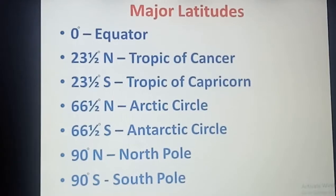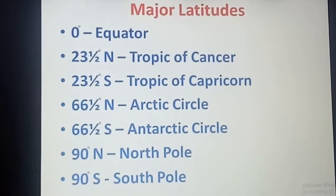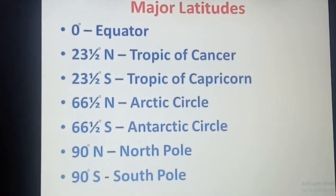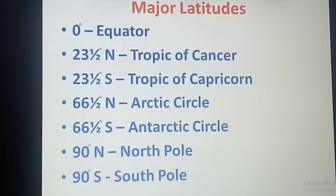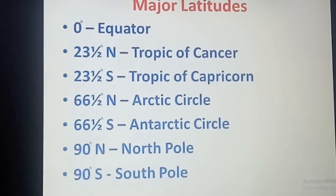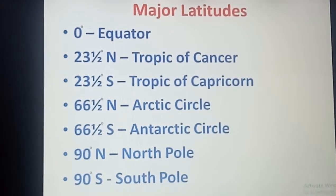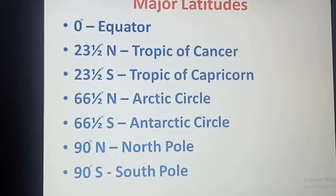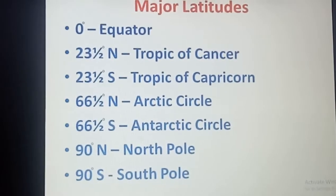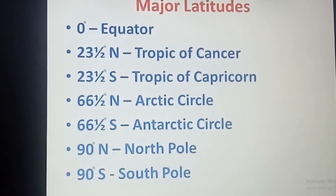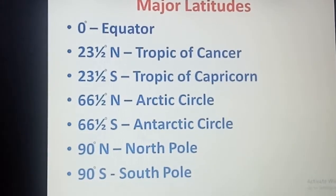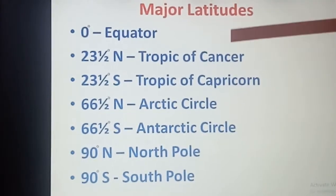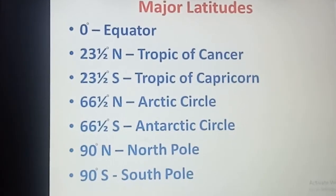Now, major latitudes — the important latitudes. There are basically 180 in number: 90 in the northern hemisphere and 90 in the southern hemisphere. These latitudes are always measured in degrees. Zero degree latitude is termed as the Equator. 23 and a half degree north is the Tropic of Cancer. 66 and a half degree north is the Arctic Circle. 66 and a half degree south is the Antarctic Circle. 90 degree north is the North Pole, and 90 degree south is the South Pole.